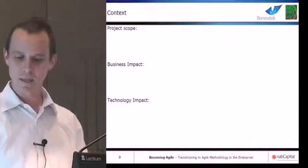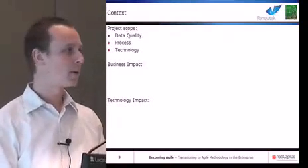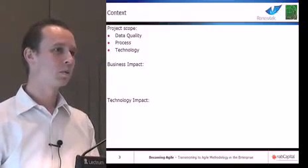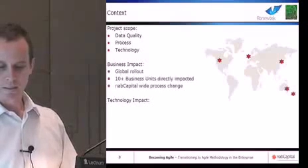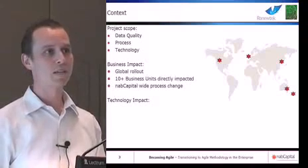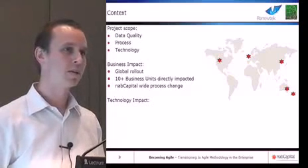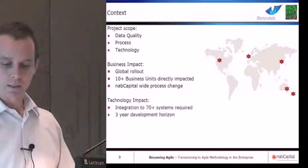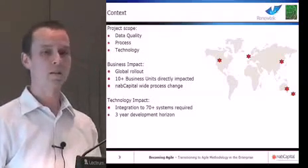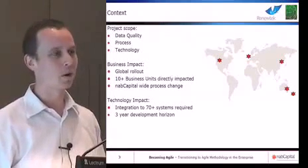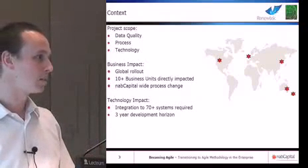To start off, I wanted to give you a little bit of context about the project itself. In terms of scope, it's a data quality project — it's about process, it's about technology. Technology is probably the smaller part; it's all about process improvement and more data quality for NAB Capital. The business impact is a global rollout affecting directly more than 10 business units globally, essentially a NAB Capital-wide process change. From a technology perspective, we're integrating to 70-plus systems with a three-year development horizon. It's in the top three big spend projects for NAB Capital — quite complex and a fairly daunting task.